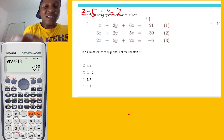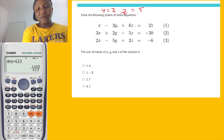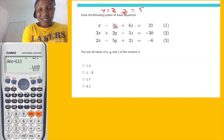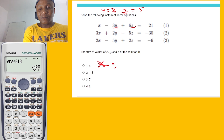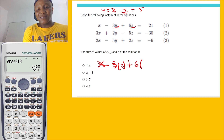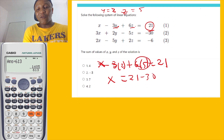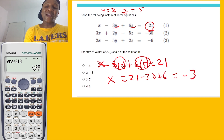Now I know y equals 2 and z equals 5. To get x, I plug into the original equation: x minus 3 times 2 plus 6 times 5 equals 21. So x minus 6 plus 30 equals 21, meaning x equals 21 minus 30 plus 6, which gives x equals negative 3.